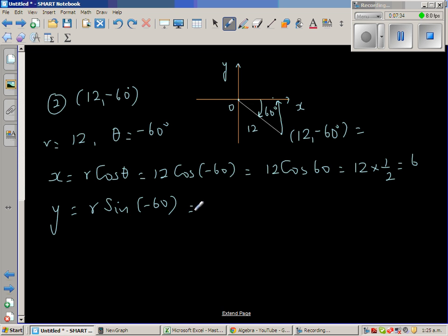Sin 60°, this would be 12. This is r cos θ. r sin θ, the formula is r sin θ, which is 12 times sin(-60°). And sin is an odd function, which is -12 times sin 60°.